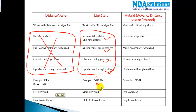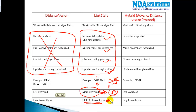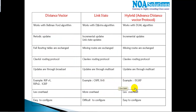There is one drawback to link state protocols: they add more CPU utilization for processing and maintaining updates. We'll explore this in more detail in the OSPF topic. Link state protocols are also more complex to configure because of design rules such as the use of areas. The reasons for this overhead and complexity will become clearer when we cover OSPF in later sessions.